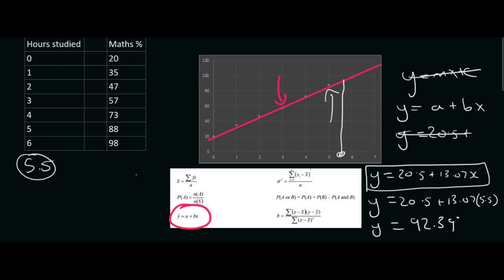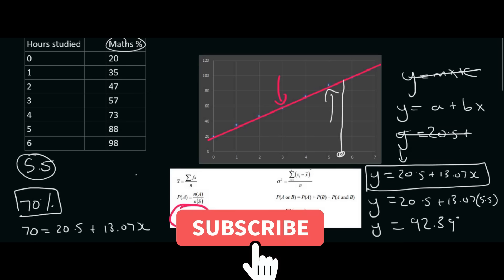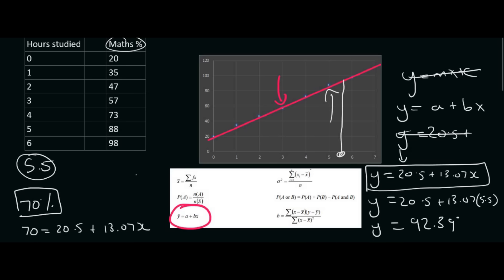Then I might say, if someone gets 70%, how many hours do you think they studied? Well, the 70% is a y value. So you would use this equation again, but you would say 70 is equal to 20.5 plus 13.07x. You would then get x by itself, and you'd get 3.79 hours. So that's how you use the equation.